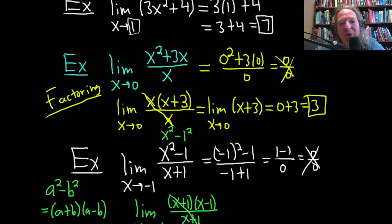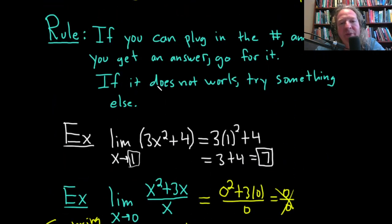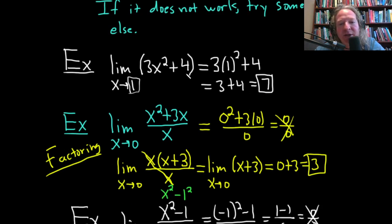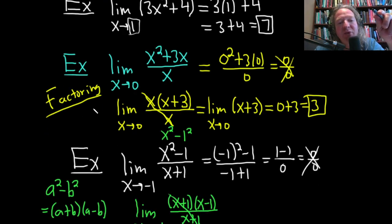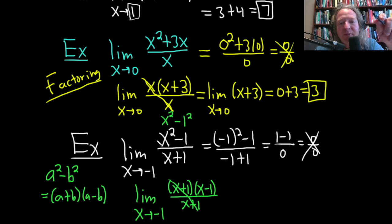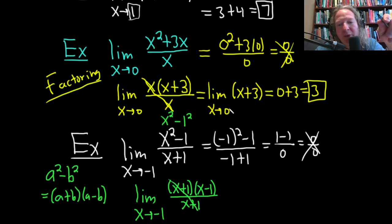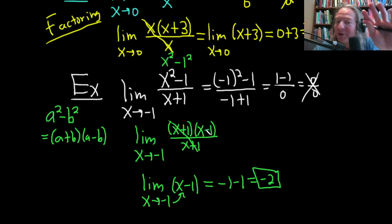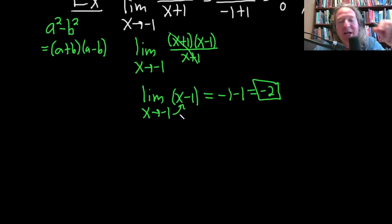Let's recap what we've done. The first example used our golden rule: if you can plug in the number and get an answer, go for it — just drop the limit sign when you plug in the number. These two examples used the same technique: factoring. In the first, we factored out a greatest common factor (the x) from the numerator. In the second, we used the difference of squares formula. Both led to cancellation and a pluggable expression.